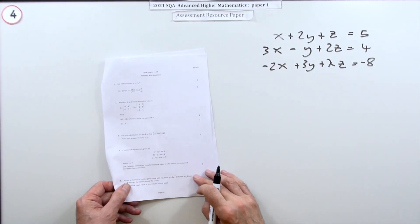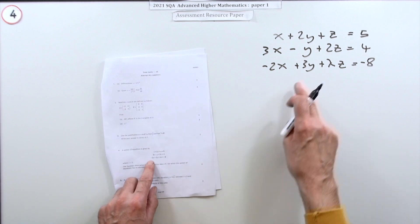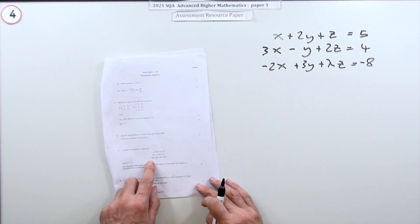So number four then from paper one of the 2021 Advanced Higher Maths Resource Paper. A four-mark question in here for solve this system of equations by using Gaussian elimination.